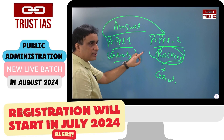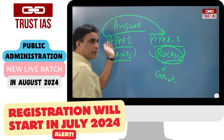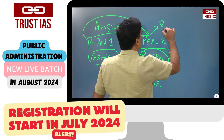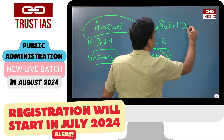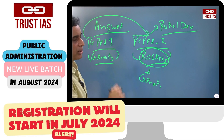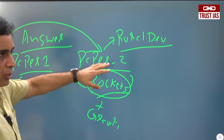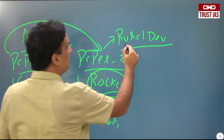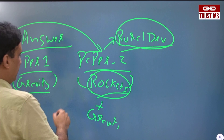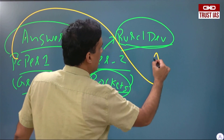When you write Paper 2's answer, you take Paper 1's theories, thinkers, and concepts and add them there. For example, a question comes on India's rural development. Rural development is part of our subject, part of our course. If you write the answer on rural development, you have to take input and mention those ideas which are part of Paper 1.